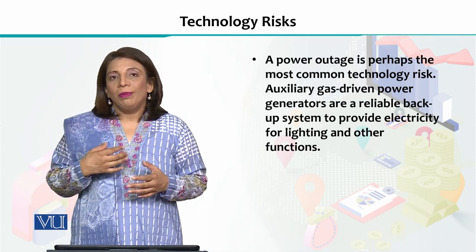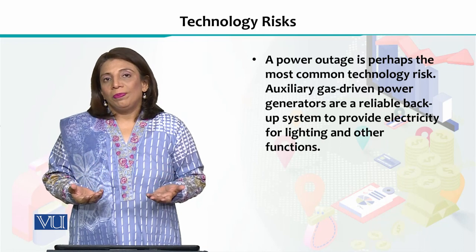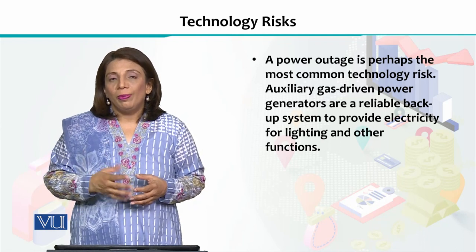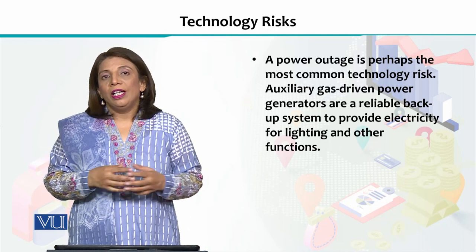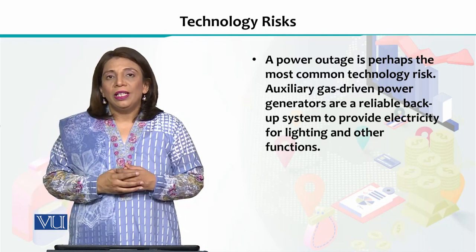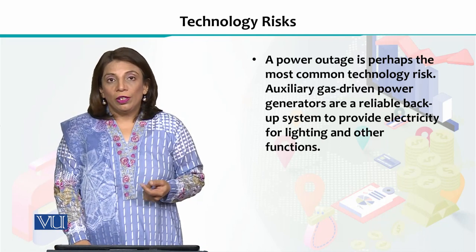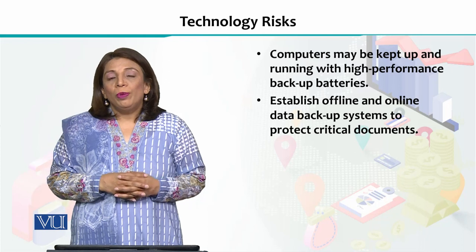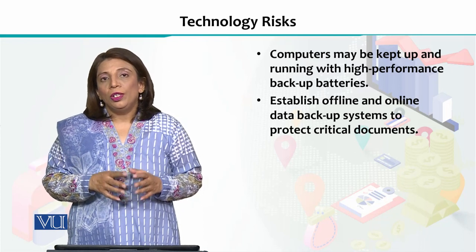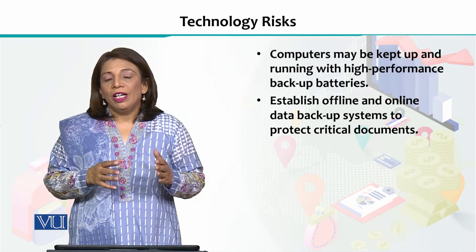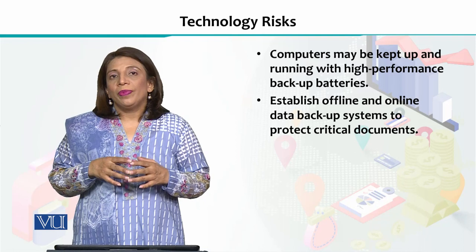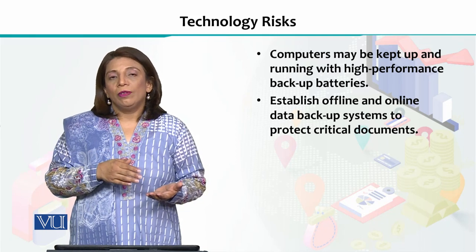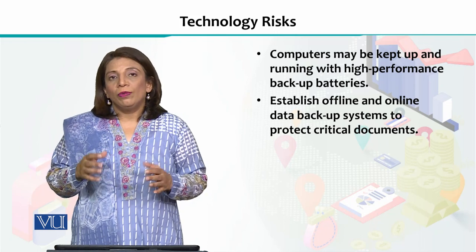For example, electricity outage is very common in Pakistan. If you have a stitching unit, a dyeing unit, or any plant or manufacturing operation dependent on electricity and machines, a power outage means no work can be done. When the electricity crisis came a few years ago, the textile units that survived were those who had installed their own generators and made their production process dependent on their own power rather than the government supply.